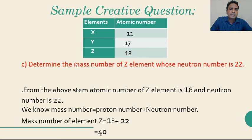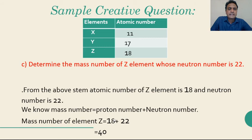Creative question (c): determine the mass number of element Z whose neutron number is 22. Z is argon, with atomic number 18. Mass number equals the total number of protons plus neutrons. The proton number is 18 and the neutron number is 22, so the mass number is 18 + 22 = 40.